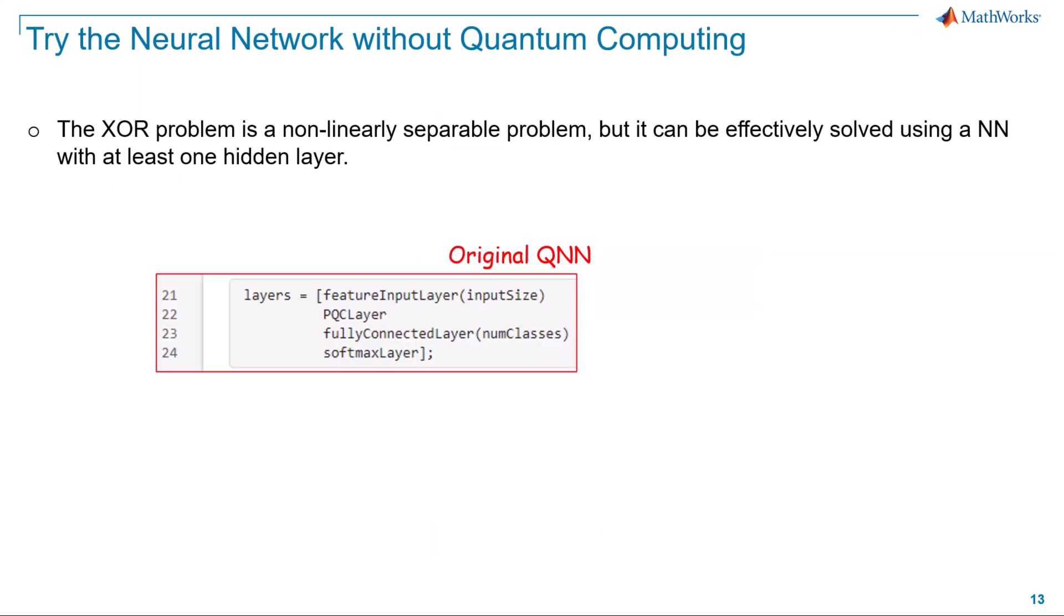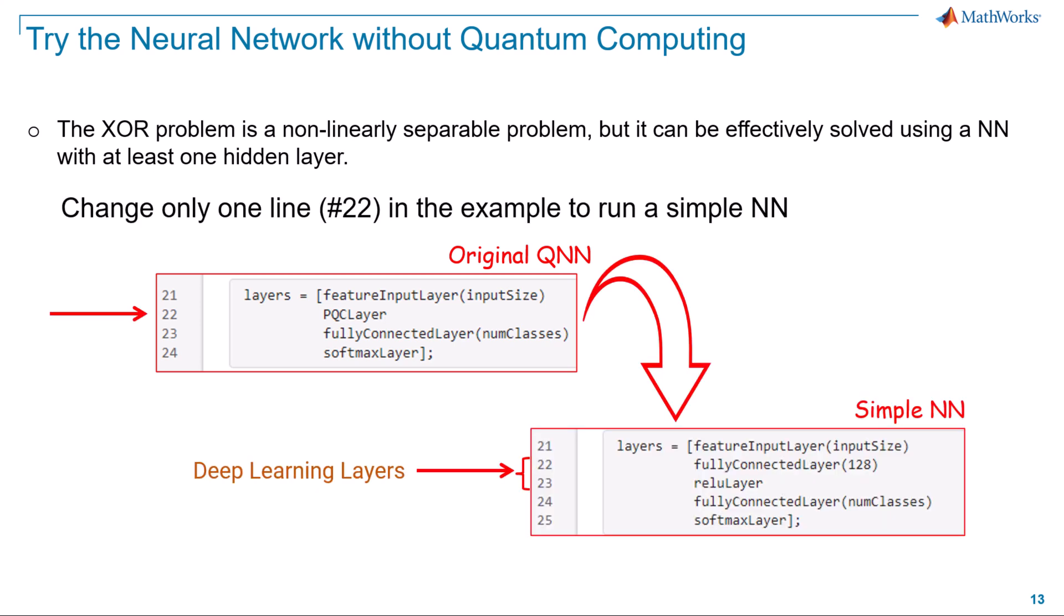Before we learn what a quantum neural network does, let us first see how the network functions without the quantum layer. This is straightforward. Go to line 22 and replace it with these two new lines. This adds a hidden layer followed by an activation layer. Now, we are back to a simple neural network. You can learn about various MATLAB deep learning layers linked in the description below. Now, let us understand the quantum neural networks.